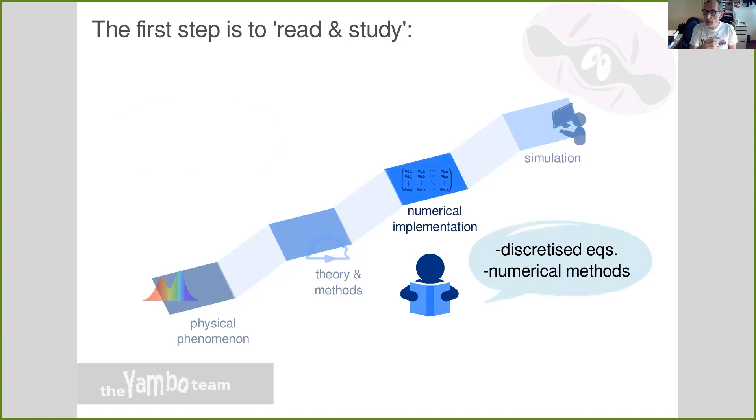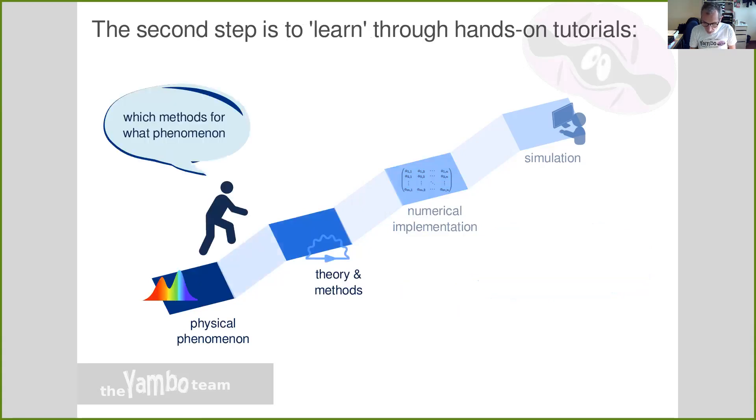Then of course, this theory must be discretized. So you have to choose, for example, a certain number of frequencies or momenta in such a way that the equations governing your theory can be run in a computer. And then finally, you need to actually run it on the computer.